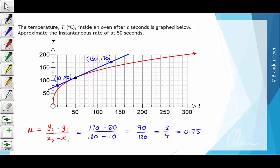And in the context of this question, that's going to be an increase of 0.75 degrees Celsius per second at the point t equals 50. So that's the instantaneous rate of change at t equals 50.